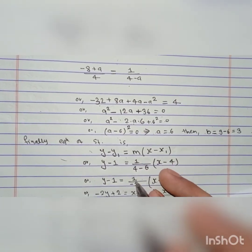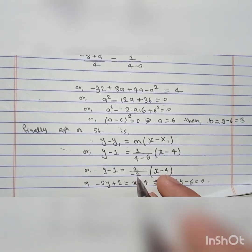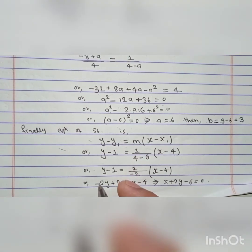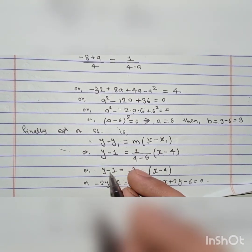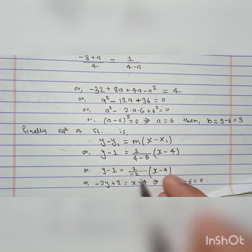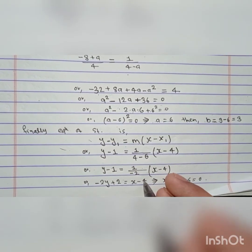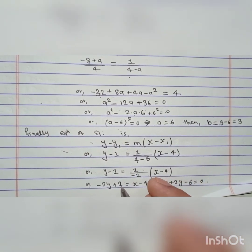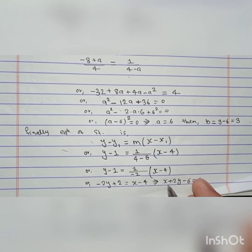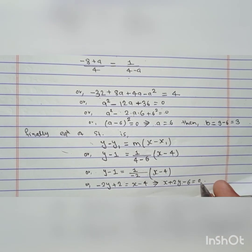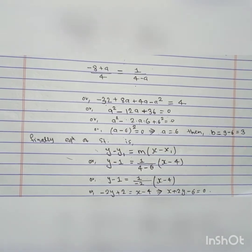Cross multiplying: -2(y - 1) = x - 4, which gives -2y + 2 = x - 4. Transposing all terms to one side: x + 2y - 6 = 0, which is the required equation of the straight line.